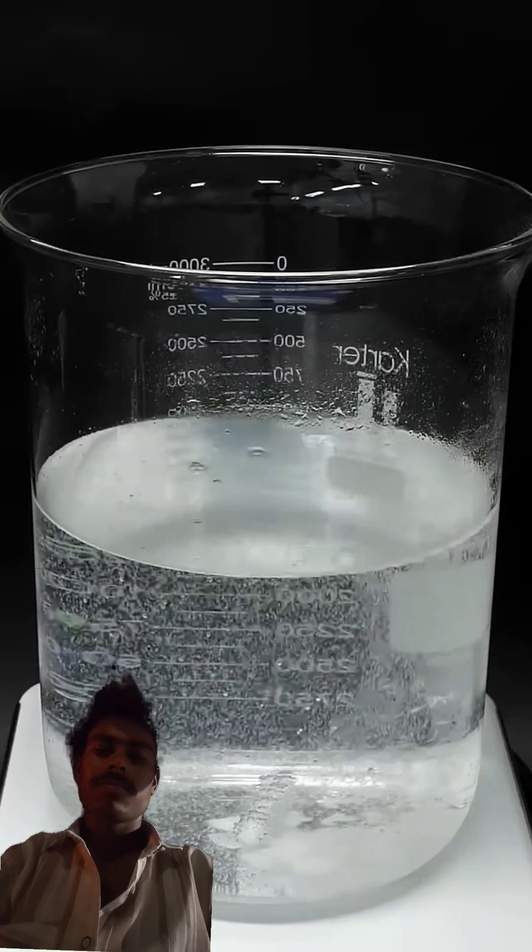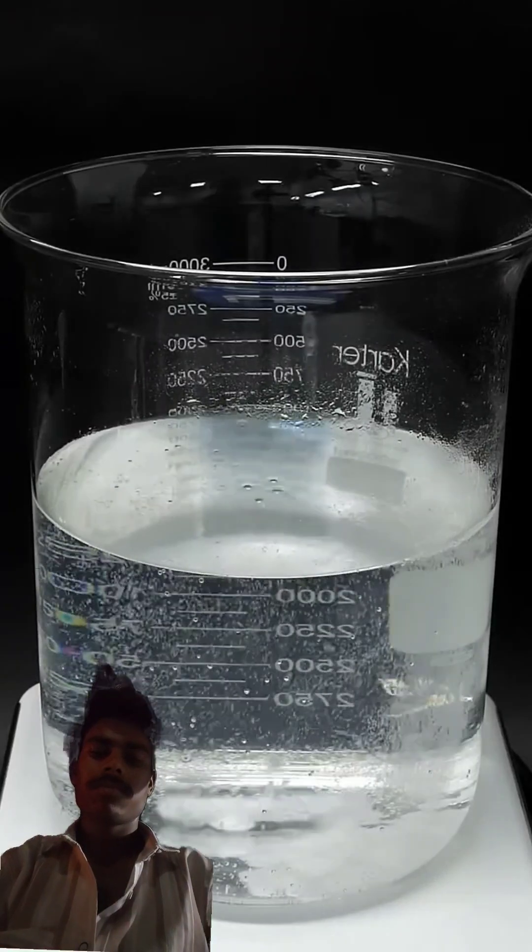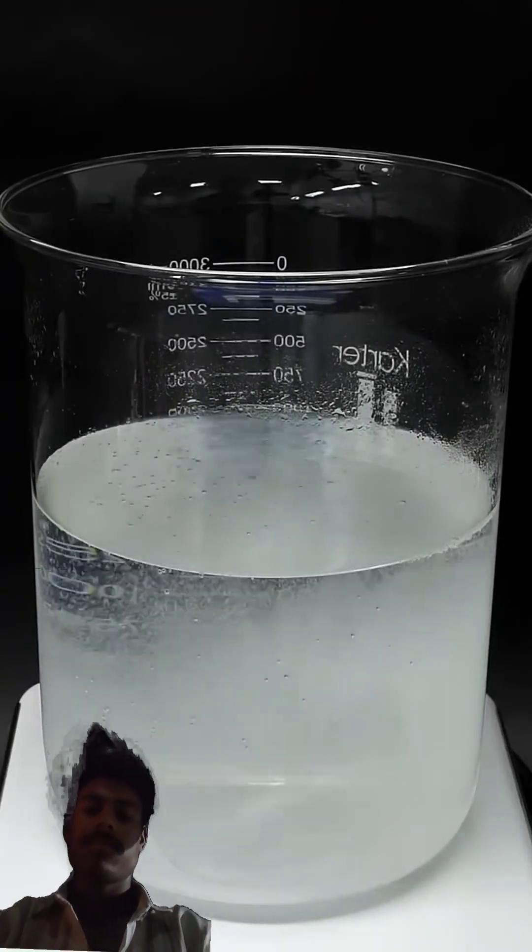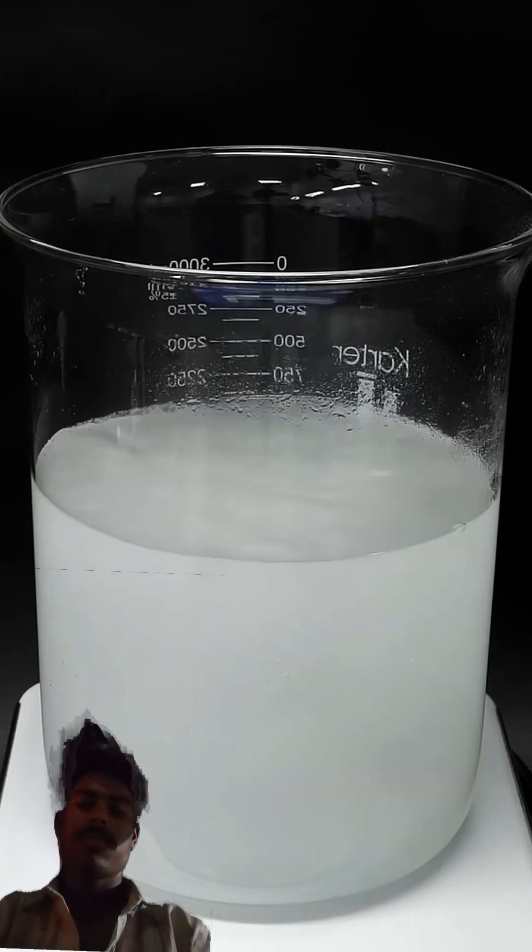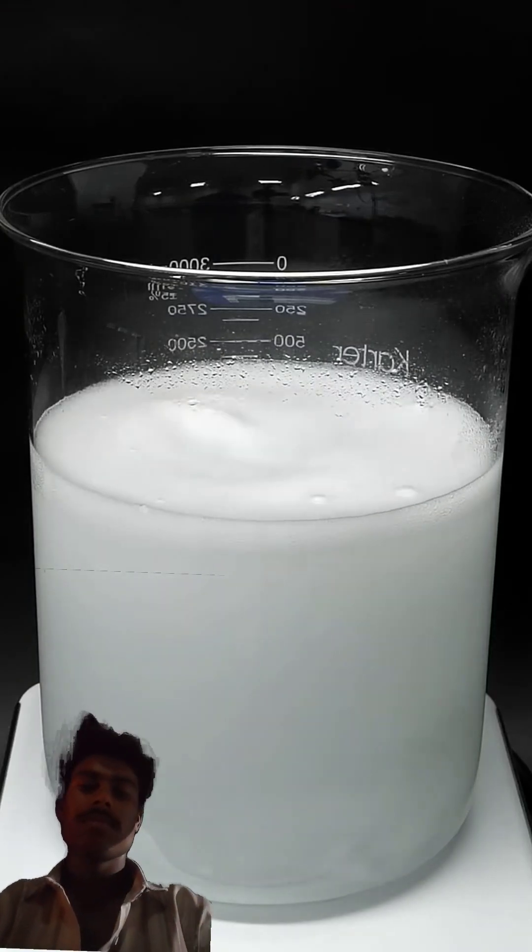Okay, so now, with all the baking soda added, I can turn on the stirring. I'll also turn on the hot plate, and I'll heat this whole thing up until it's almost boiling.